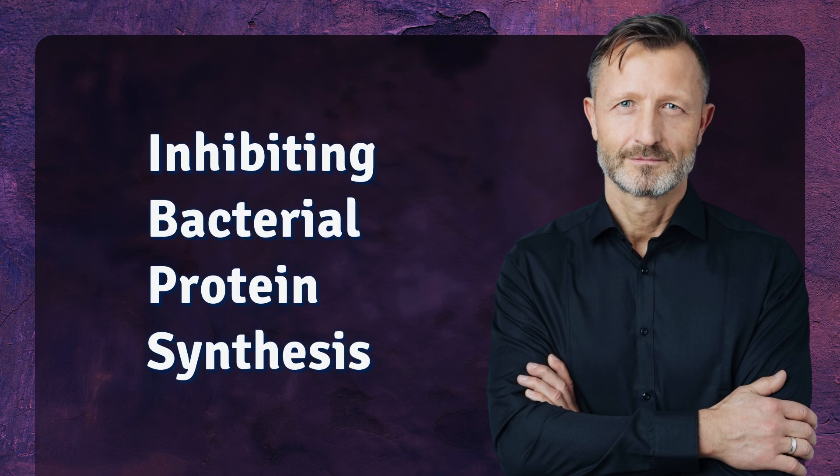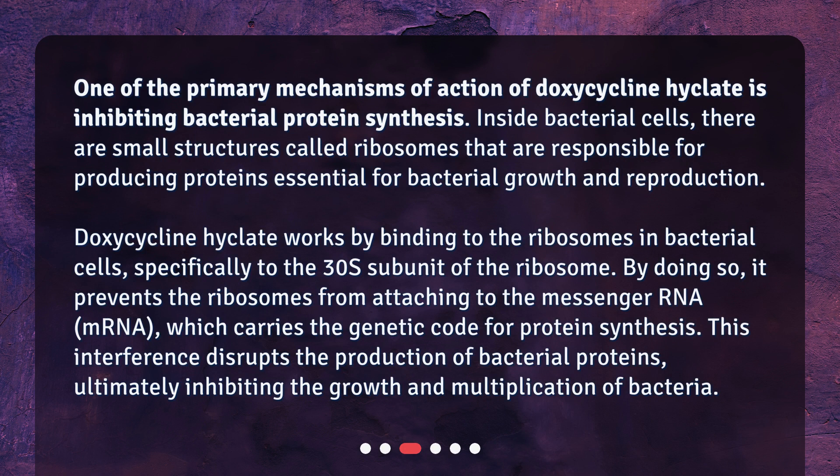Inhibiting Bacterial Protein Synthesis. One of the primary mechanisms of action of doxycycline Hyclate is inhibiting bacterial protein synthesis. Inside bacterial cells, there are small structures called ribosomes that are responsible for producing proteins essential for bacterial growth and reproduction. Doxycycline Hyclate works by binding to the ribosomes in bacterial cells, specifically to the 30S subunit of the ribosome. By doing so, it prevents the ribosomes from attaching to the messenger RNA (mRNA), which carries the genetic code for protein synthesis. This interference disrupts the production of bacterial proteins, ultimately inhibiting the growth and multiplication of bacteria.